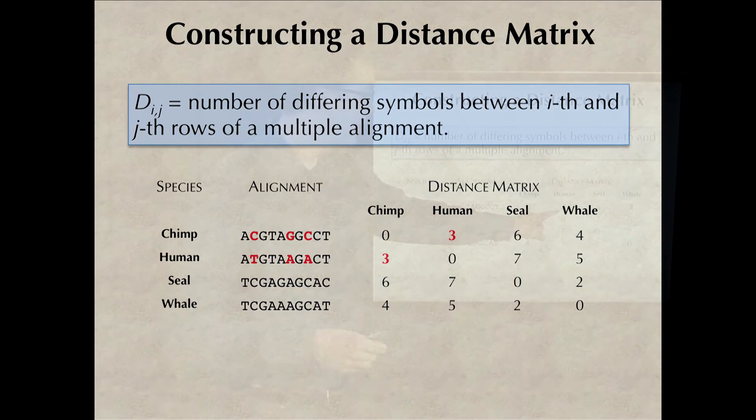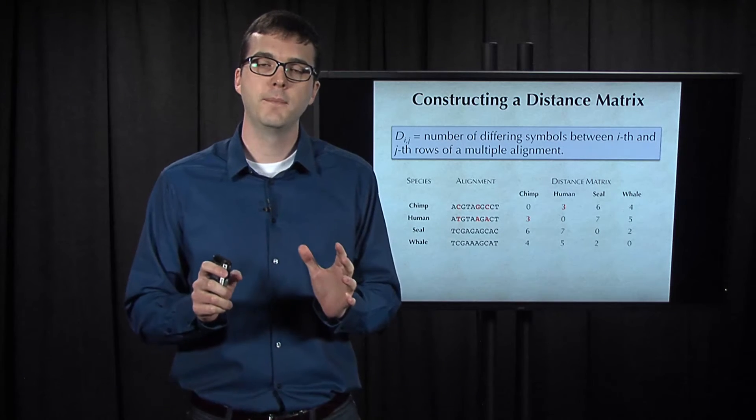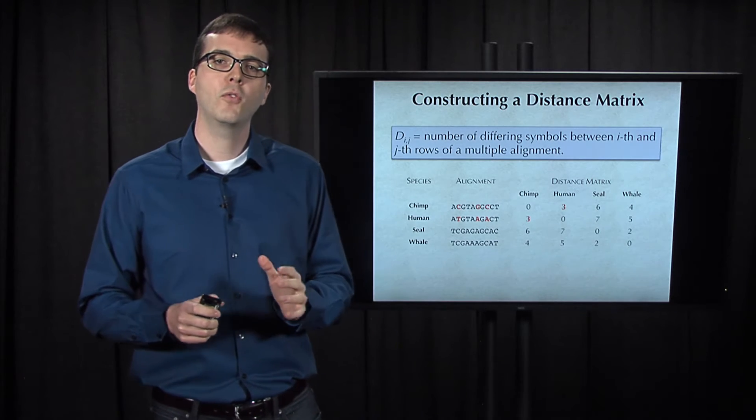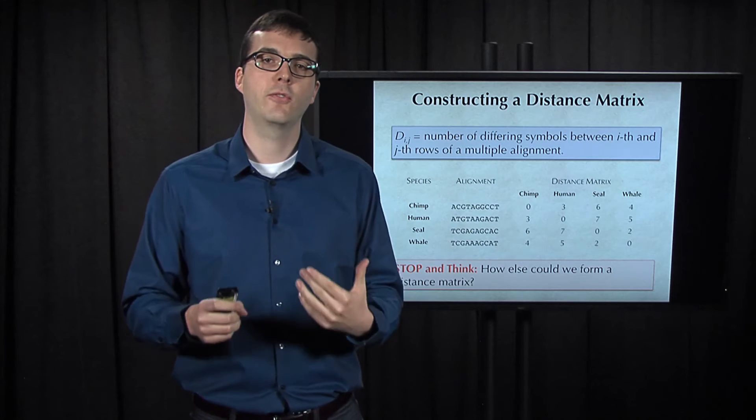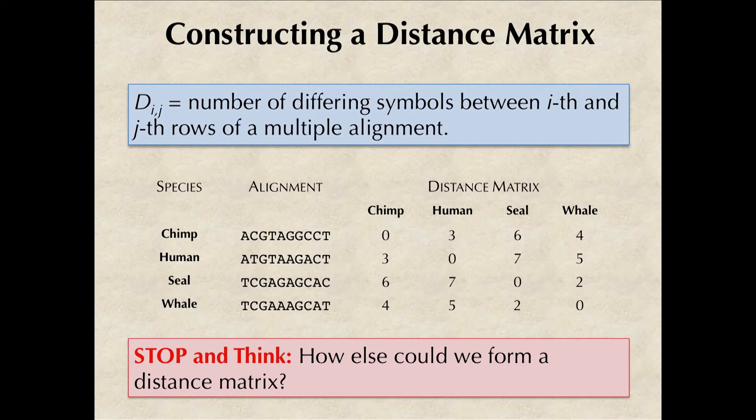So we simply set d sub i2 and d sub 2 1 of this distance matrix equal to 3. We have encountered several other different notions of distance already that we could also use to construct a distance matrix, but constructing a distance matrix from a multiple alignment is very common.